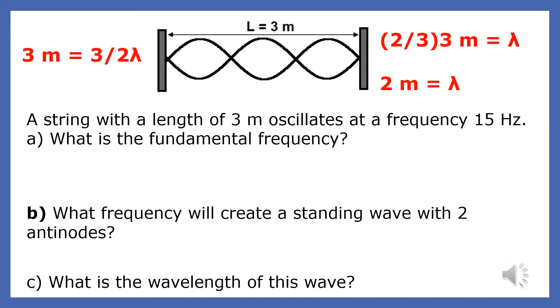What frequency will create a standing wave with two antinodes? If the 15 Hz standing wave has three antinodes, then it stands to reason that two antinodes would be produced by a source vibrating at 10 Hz.